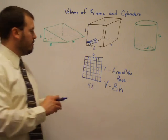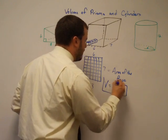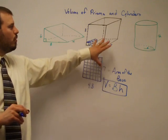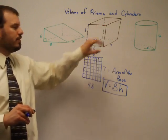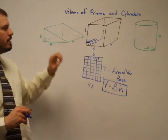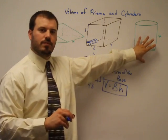And this basic formula, volume of a prism is equal to the area of the base times the height, will work for a problem like this, a problem like this, as well as a cylinder.